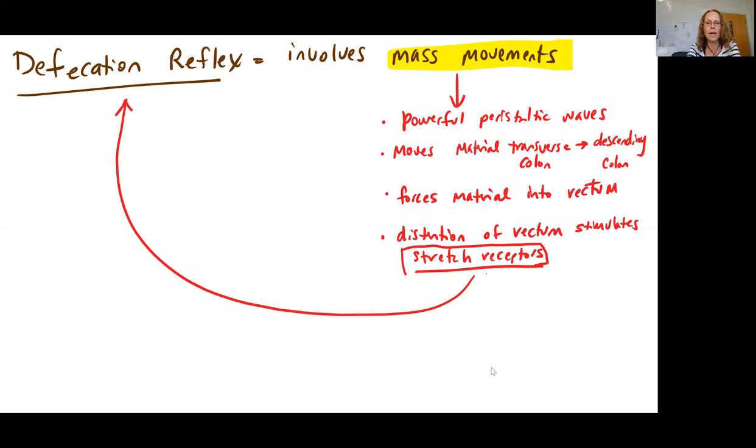The mass movements are going to help move material from that transverse colon into the descending colon. And then it's also helping to force material into the rectum. Once you have material in the rectum, you're going to be stimulating stretch receptor cells, which is what will actually trigger the defecation reflex.